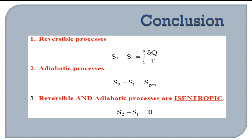In conclusion: for a process from 1 to 2, S₂ − S₁ = ∫δQ/T. For an adiabatic process (no heat transfer), S₂ − S₁ equals the entropy generated. A reversible and adiabatic process is termed an isentropic process, where entropy remains constant: S₁ = S₂, so ΔS = 0.